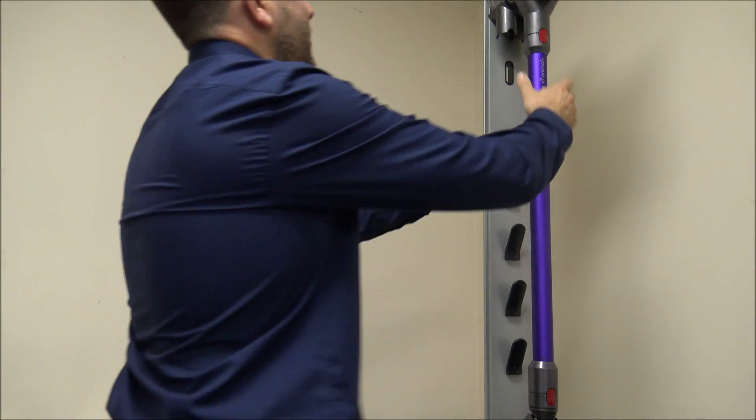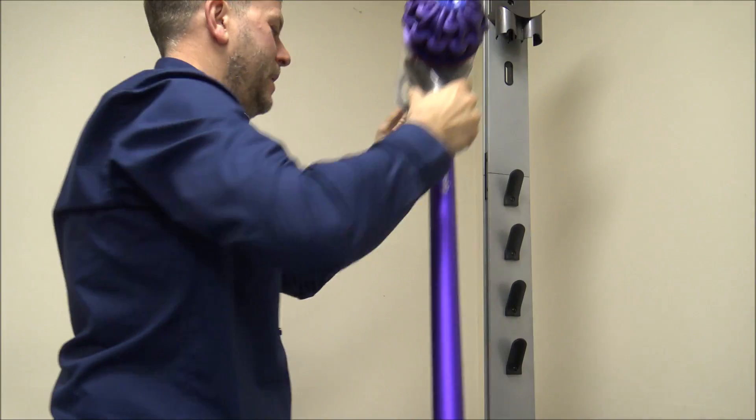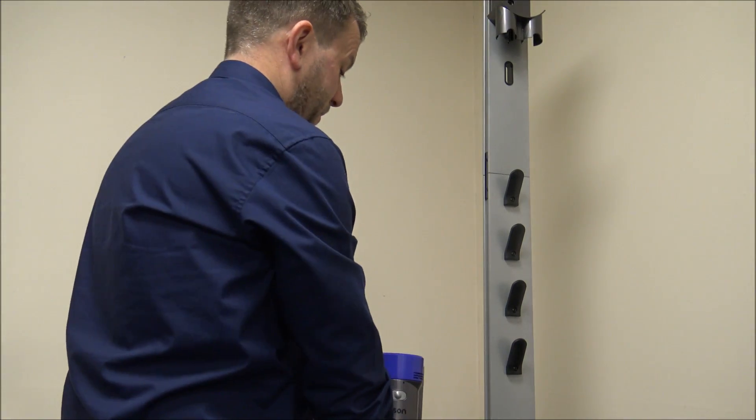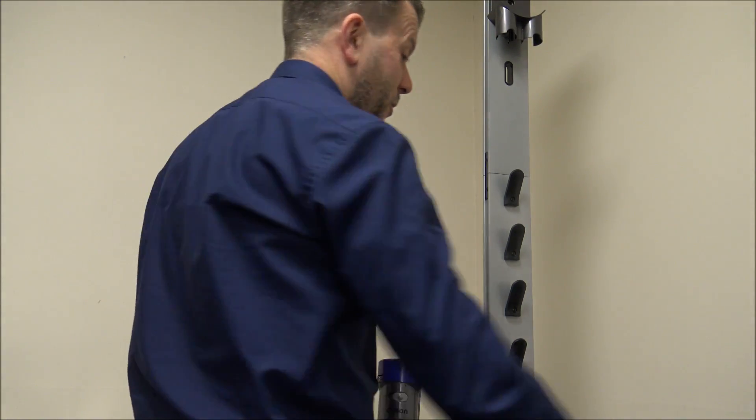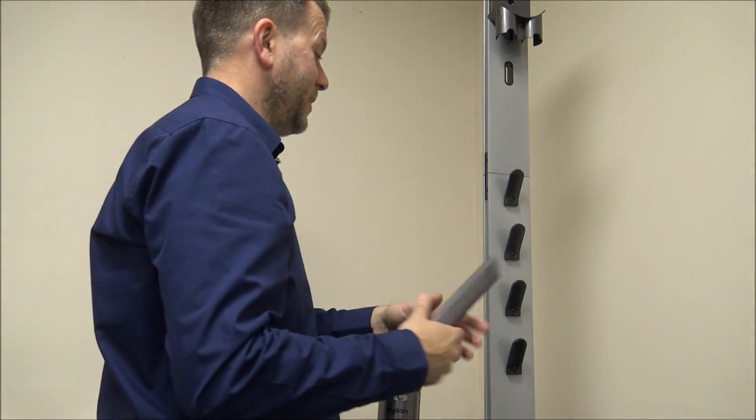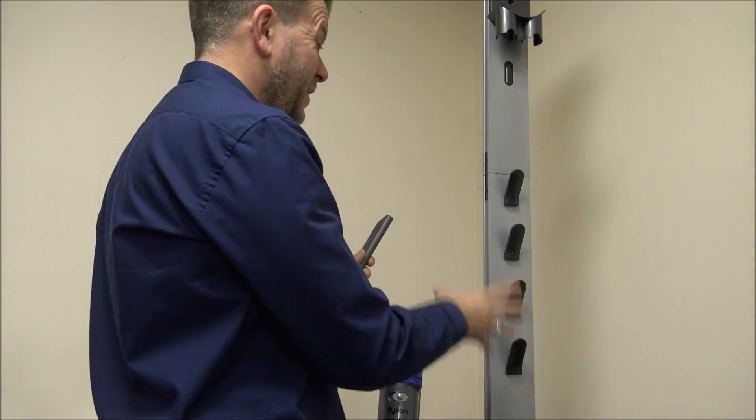So for this next bit I will take the vacuum off, but with a lot of cordless vacuums, especially the Dyson products, they do come with a really good range of tools and accessories. And the advantage of this stand is that you've actually got space to put four tools on here.